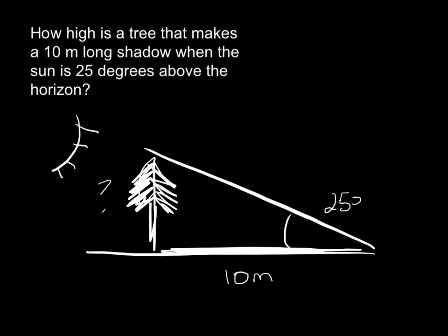And we want to know how high is the tree. So this makes a right angle, and we need to identify our parts. This is our adjacent. This is our opposite. It's opposite the angle, it's across from the angle. And so then, which trig function? SOHCAHTOA. Which trig function has opposite and adjacent in it? And we see that it's the tangent.